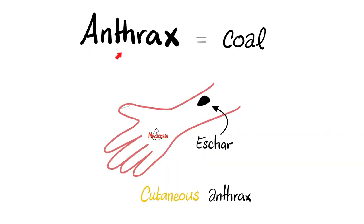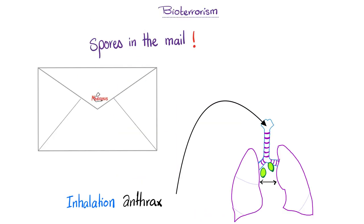By the way, why do we call it anthrax? Because anthrax literally means coal, because of the black eschar which is seen in cases of cutaneous anthrax. Anthrax spores could be used in nefarious acts. Anthrax spores were found in the mail before. If you inhale these spores, you get a different type of anthrax called inhalation anthrax, not to be confused with the cutaneous anthrax.